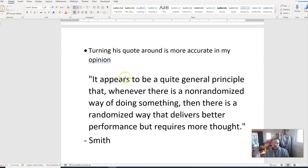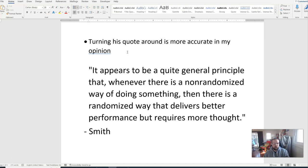So I personally would turn this quote around and have it be more accurate. Still not 100% accurate but more accurate. So I would say it appears to be a quite general principle that whenever there's a non-randomized way of doing something, there's a randomized way that delivers better performance but requires more thought, and I can define the better performance. I can measure that in terms of sampling error, non-sampling error, cost, timeliness, and those things. I can actually measure all that stuff, estimates being close and so forth.